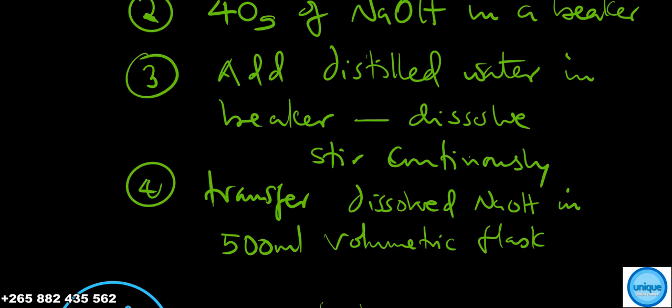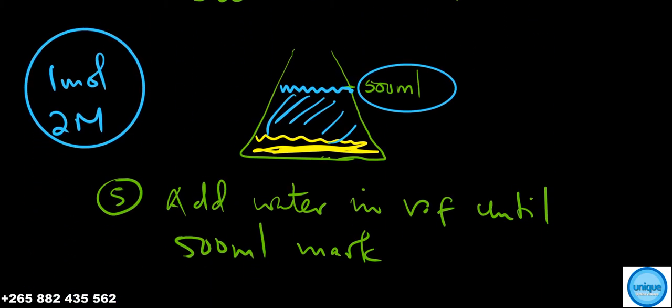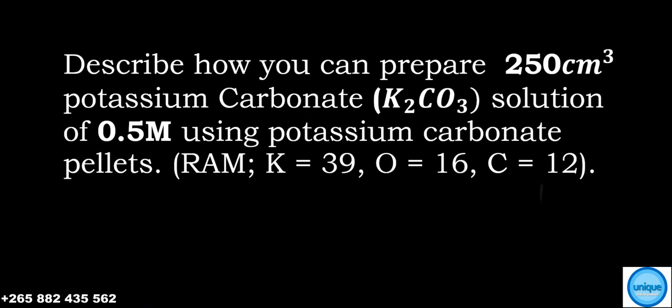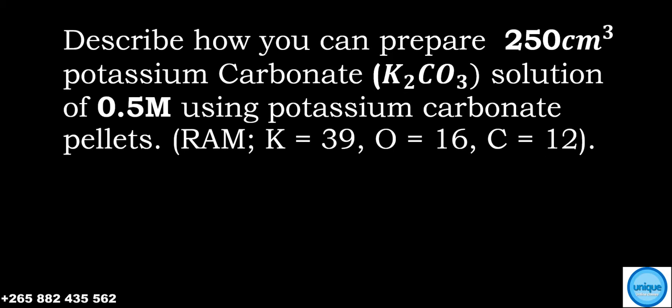The next question reads: Describe how you can prepare 250 cubic centimeters of potassium carbonate K₂CO₃ solution of 0.5M using potassium carbonate pellets. Potassium is 39, oxygen is 16, carbon is 12.